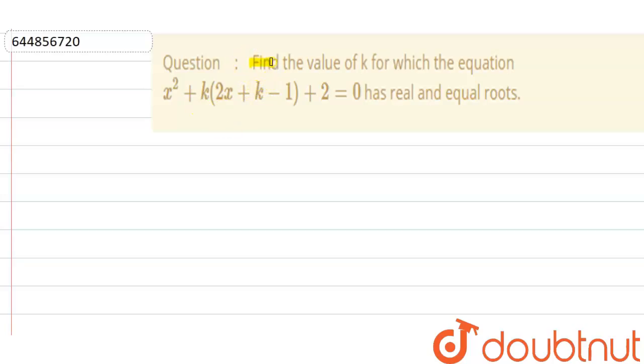Hello everyone. Our question is: find the value of k for which the equation x² + k(2x + k - 1) + 2 = 0 has real and equal roots.